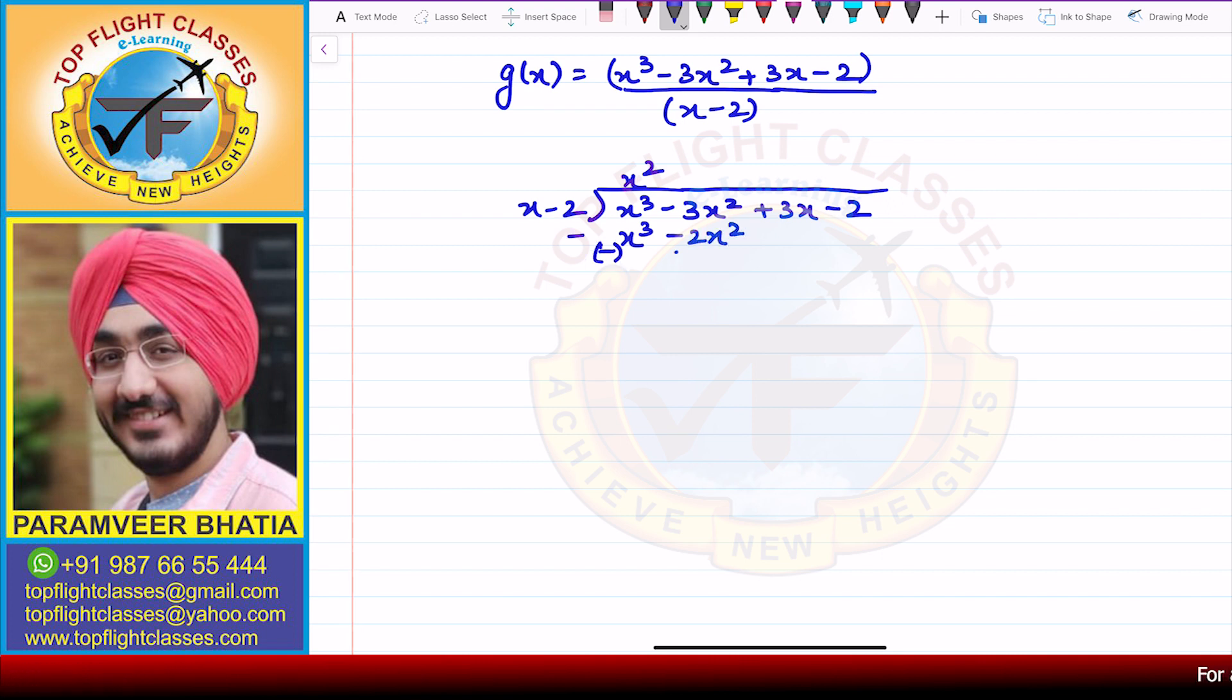When I subtract, the signs will change. On the change of signs, I will get x³ - x³ that cancels, -3x² + 2x² = -x² + 3x - 2.